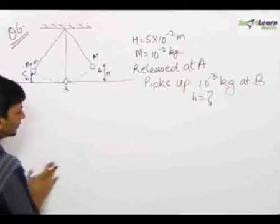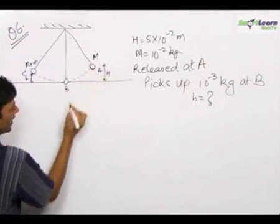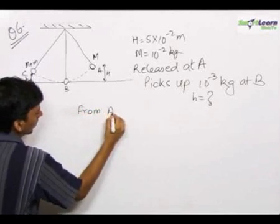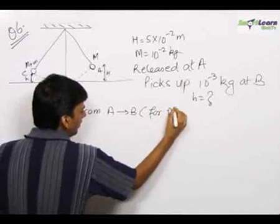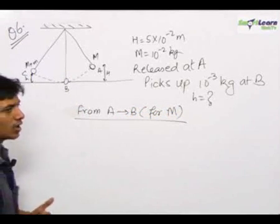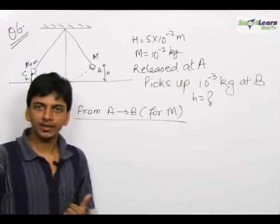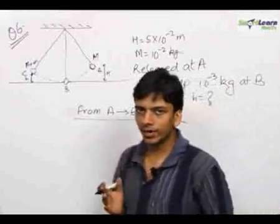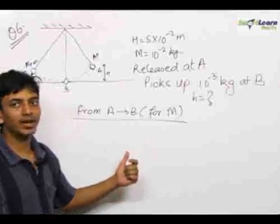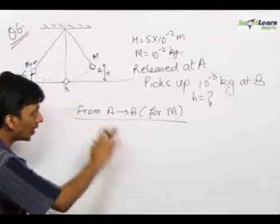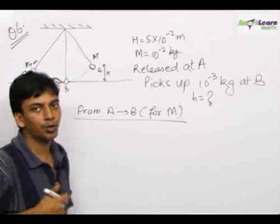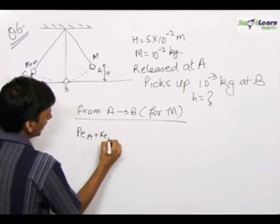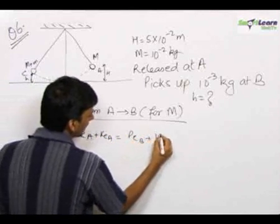For solving this question, let us first analyze the motion of this mass m from point A to B. From A to B, work done by external forces is 0 because the external force is tension, and tension is always perpendicular to the displacement, giving work done by tension as 0. There are no internal non-conservative forces, so work done by internal non-conservative forces is also 0. Therefore, potential energy at A plus kinetic energy at A equals potential energy at B plus kinetic energy at B.